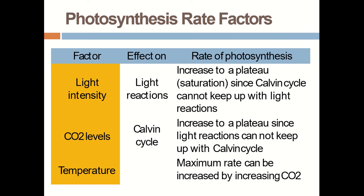This comparison chart covers all three factors: light intensity, CO2, and temperature. Light intensity mostly affects the light reaction and increases to a plateau since the Calvin cycle cannot keep up with the light reaction. CO2 level increases to a plateau since the light reaction cannot keep up with the Calvin cycle. Both are interdependent because to run the Calvin cycle we require ATP and NADPH formed in the light reaction. Temperature's maximum rate can be increased by increasing CO2. Thank you for your patience. We will see the next slides for a few more topics.